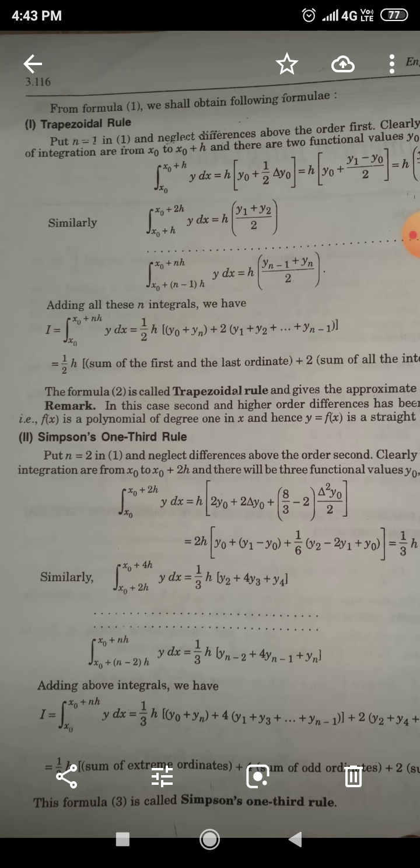Another formula, Simpson one third rule. So we are knowing well Newton-Cotes formula is I_u equal to H N y_0 plus N square upon 2 delta y_0 plus N cube upon 3 minus N square upon 2 delta 2 y_0 upon factorial 2.